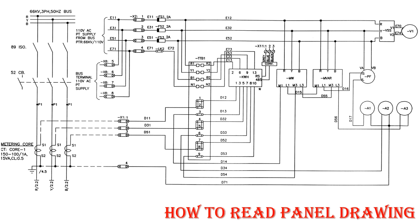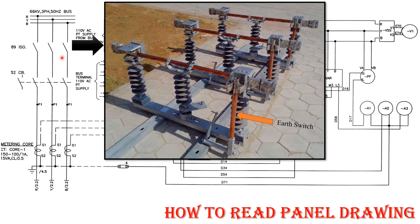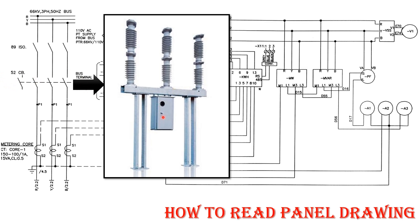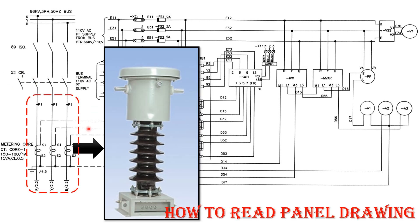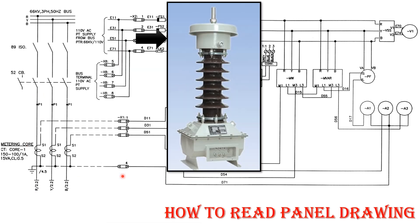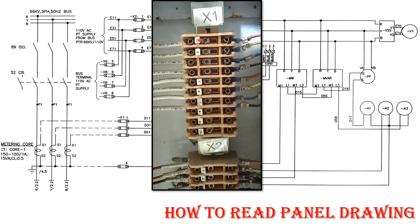Now this is the basic wiring diagram of how CT and PT wiring is done inside the control panel. Starting with R, Y, B phase — there is the isolator for 66 kV, then a circuit breaker, then the CT, and a PT. From the PT's secondary terminal blocks, wiring comes into the control panel. You can see on this TB how the wiring is done for PT.